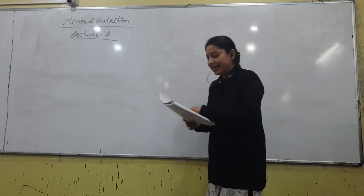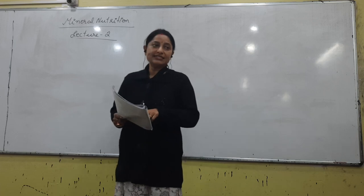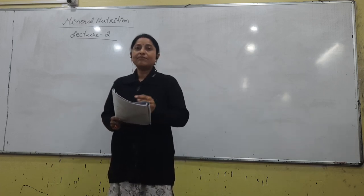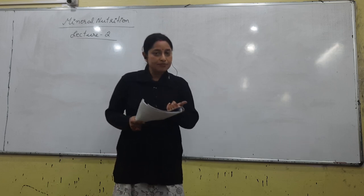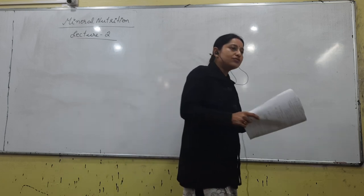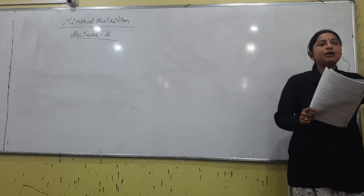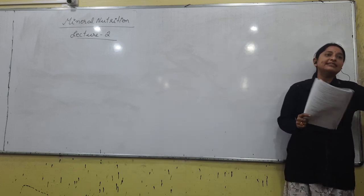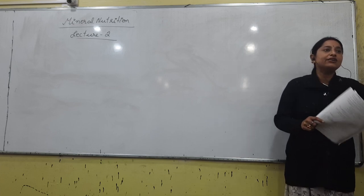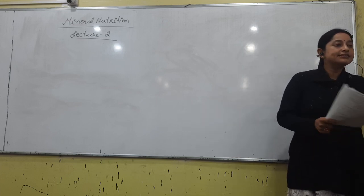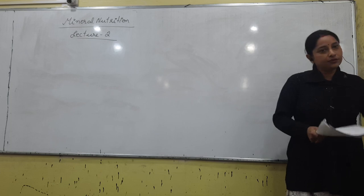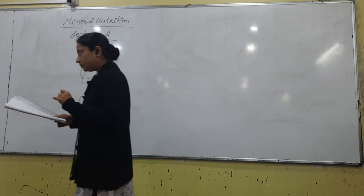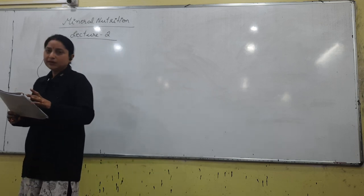If nitrogen deficiency occurs, there is purple coloration in stems and petioles due to anthocyanin pigment. A question may ask: purple coloration in stems is due to deficiency of which element - it's due to deficiency of nitrogen. So out of the deficiency symptoms, we remember number one - chlorosis in older leaves - and number four - purple coloration.